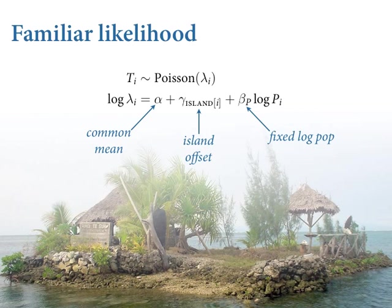Let's start with the familiar part of this model. This will look like a regular old Poisson GLM — we did this before. The only thing that's really different now is this gamma_i term. This is going to be our island offset — still varying intercepts — but they're going to come out of what's called the Gaussian process prior that we'll define on the next slide. They give you an offset from the expectation based upon a common mean alpha and the fixed effects of log population for that island. The top part is your oldie Poisson GLM. Nothing new about it at all.